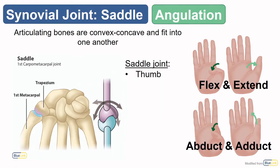A saddle joint is named for how it resembles a saddle and rider. This joint has similar mobility to a condylar joint, allowing for flexion, extension, abduction, and adduction. The thumb is an example of a saddle joint, though there is a slight difference in the plane in which these movements occur at the thumb compared to other joints — we'll discuss this more in upper limb anatomy.